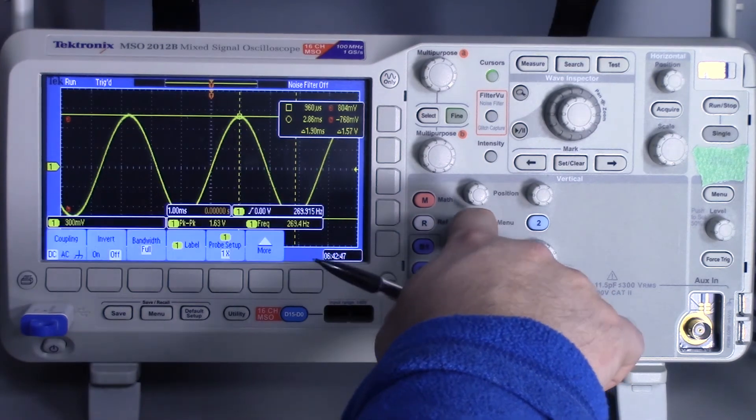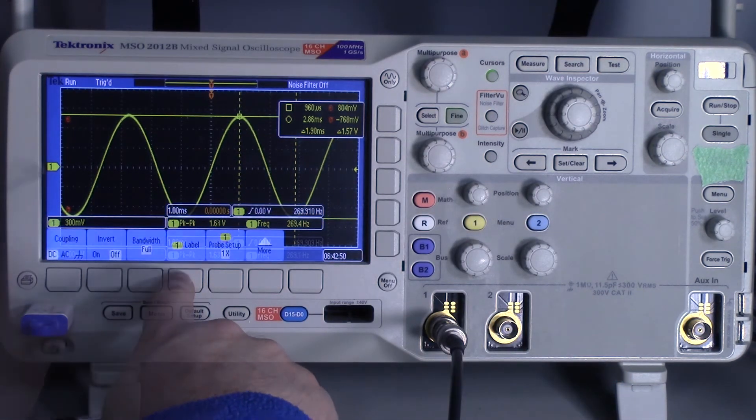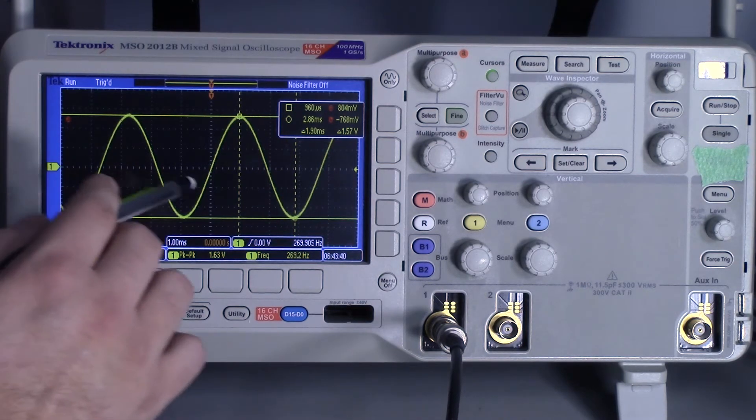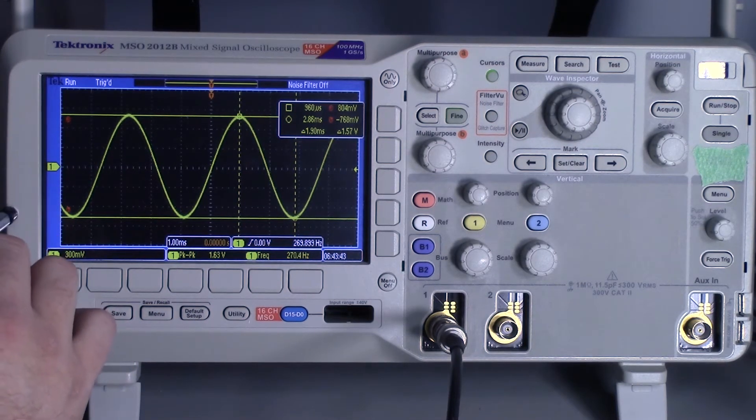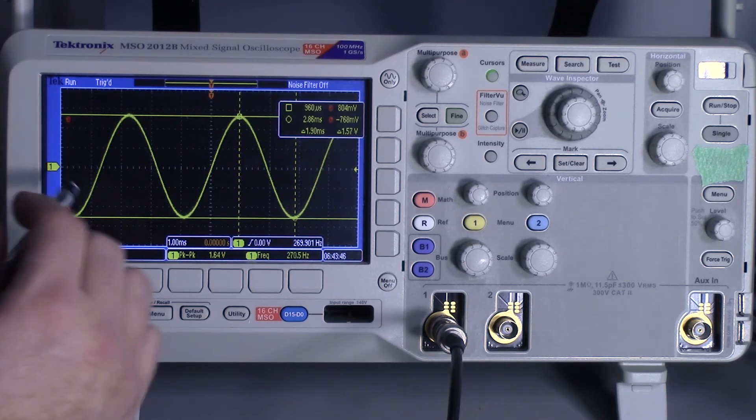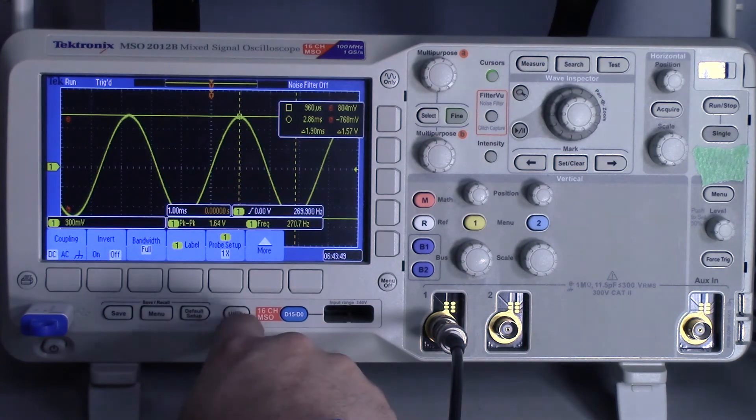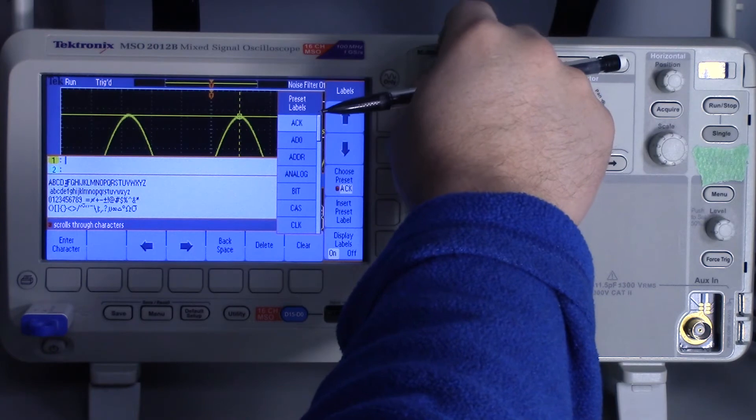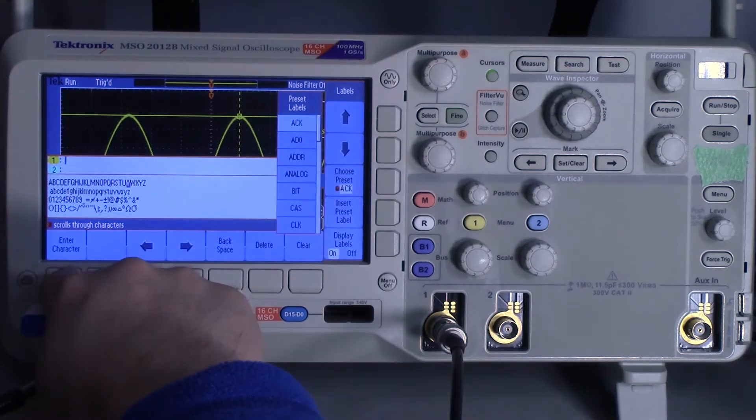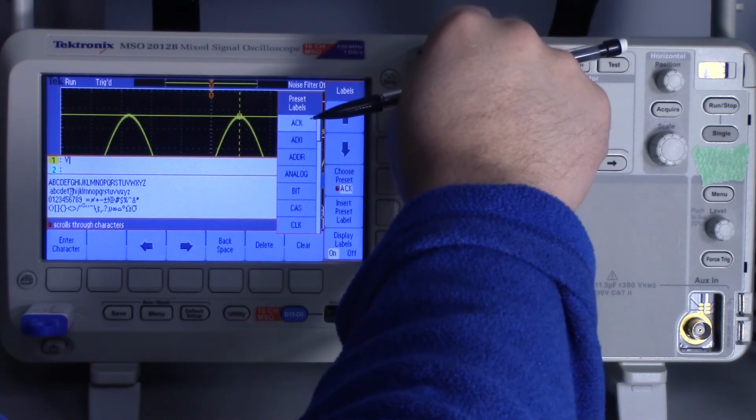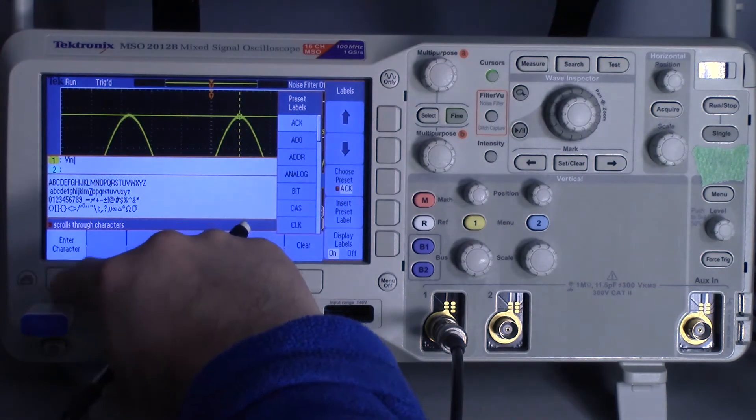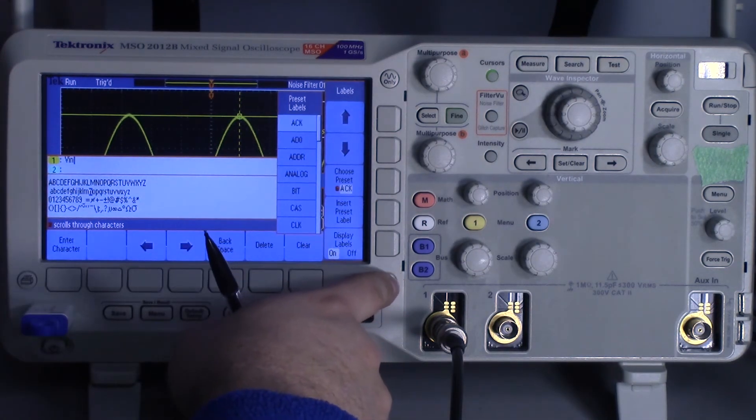Another thing I forgot to mention is that you can change the label. You can see over here on the side of the vertical scale, we have the one indicating that yellow is channel one. Often if you have multiple waveforms, maybe you want to label it. You can go into channel one, go into the label, and I want to change this to V, let's just call it VIN, and enter character.